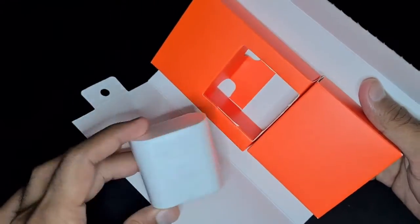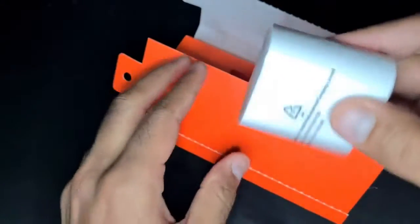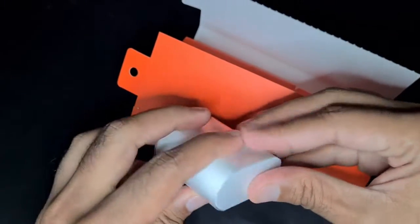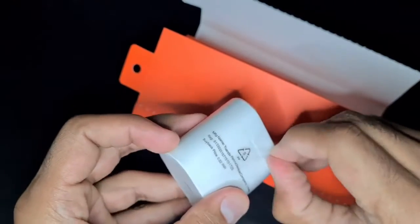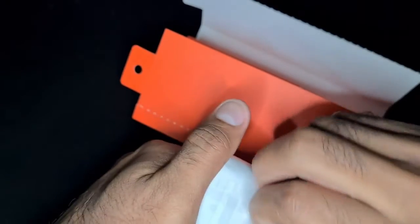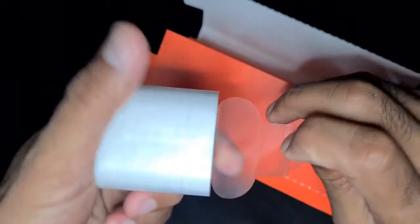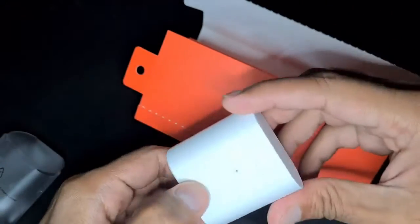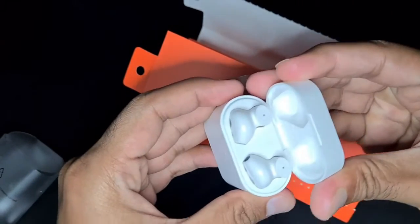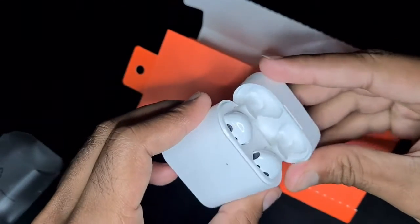Oh, okay. So this is the main charging box that comes with the earbuds. I think the earbuds are going to be inside this. Let me just get it open. Yeah, so this is the charging box and yes, the headphones are there.